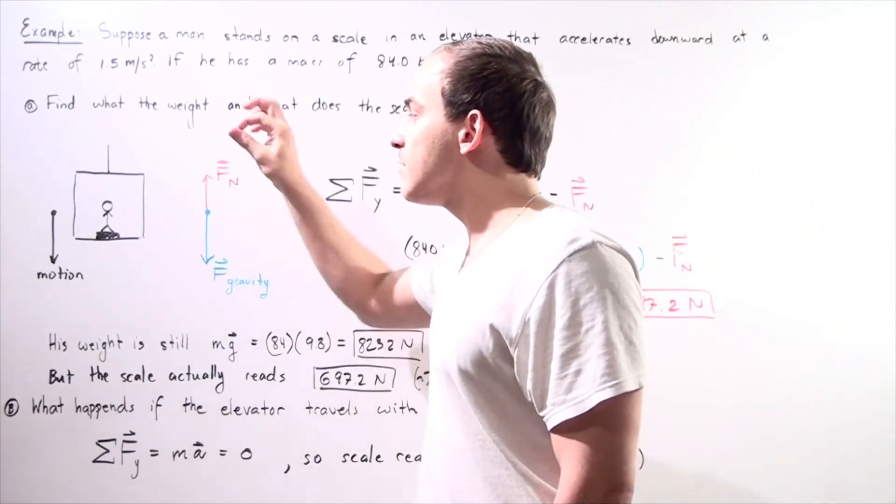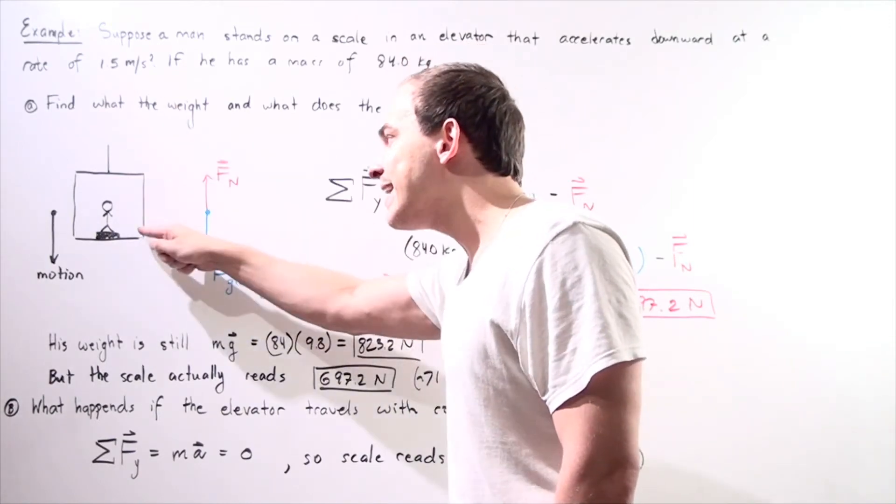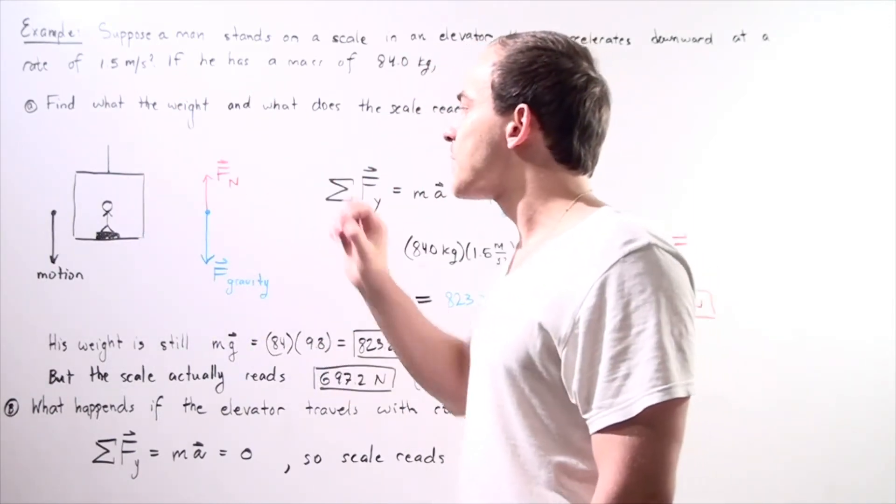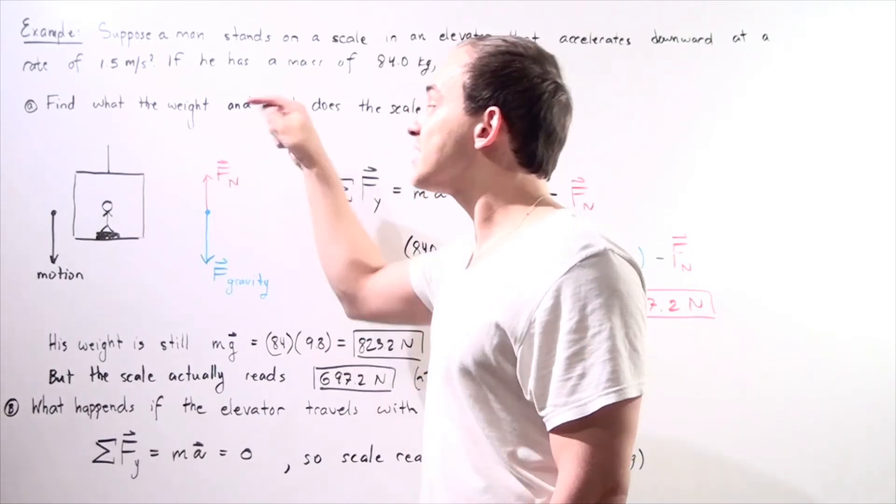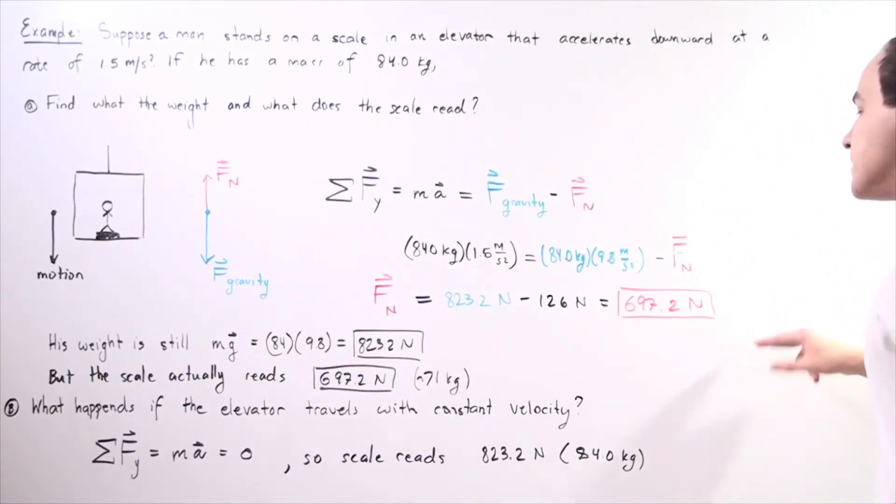The normal force is the force exerted by the scale on the person. And according to the third law of motion, the person exerts a force onto the scale of the same magnitude but in the opposite direction.